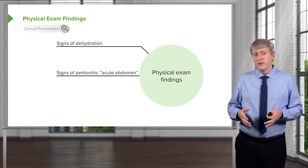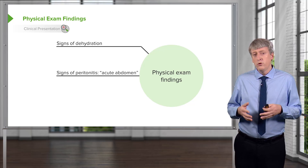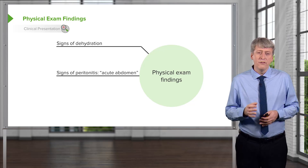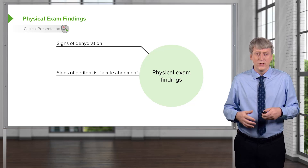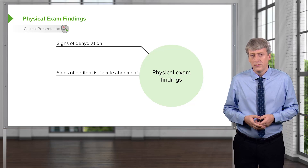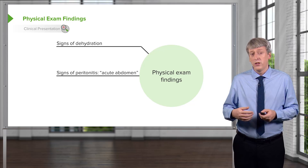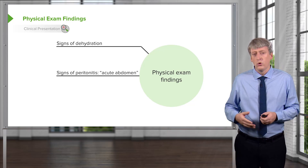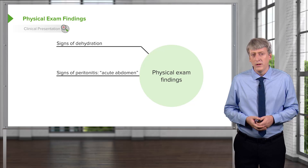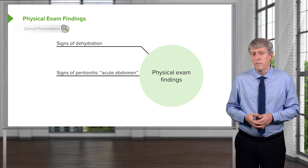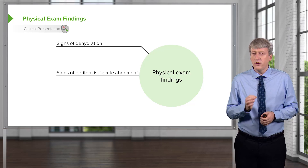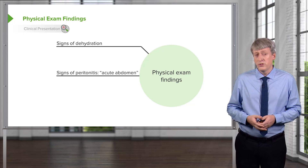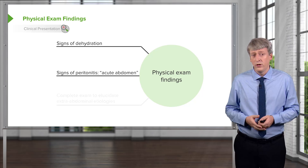If a patient has peritonitis or an acute abdomen, this is a very different problem than just acute viral illness. A patient with appendicitis can have pain with palpation, rebound, or guarding over the abdomen. Remember, diseases like appendicitis can be very tricky to pick up in small children — in fact, a sizable percentage are missed until they perforate.